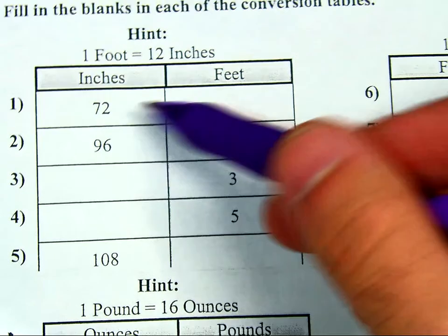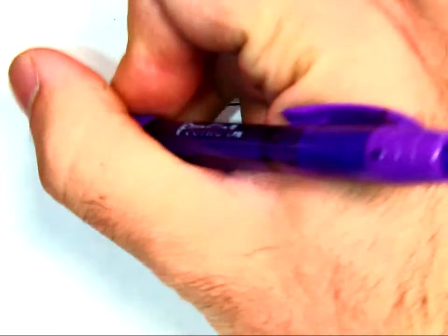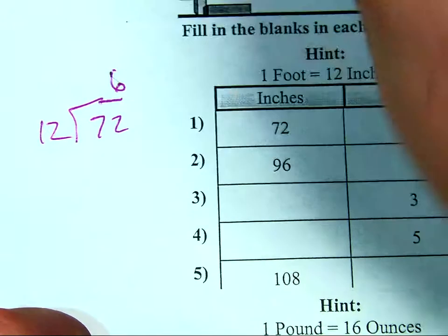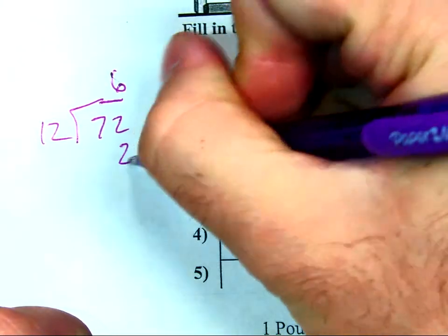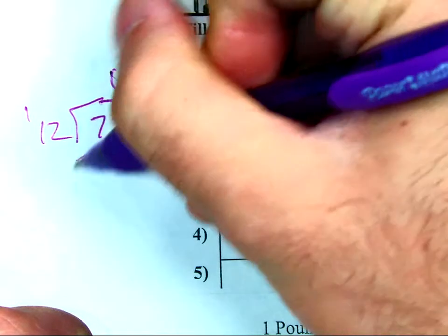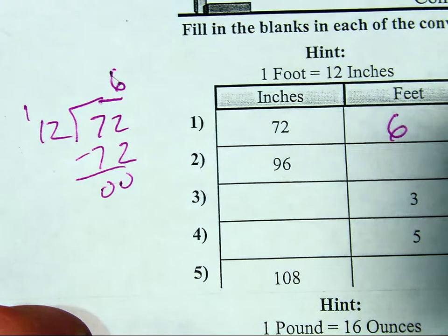I can just quick hand this. I just divide 72 by 12. Now 12 can go into 72 6 times. 6 times 2 is 12. 6 times 1 is 1 plus 1 is 7. I have 6 feet for 72 inches.